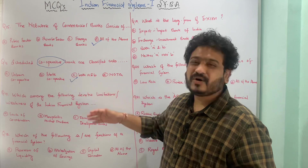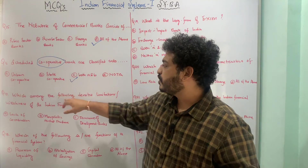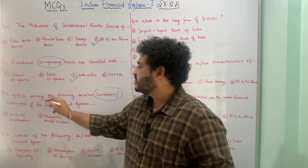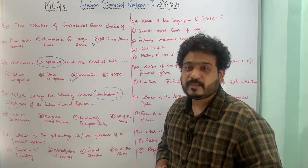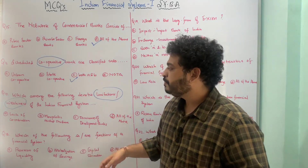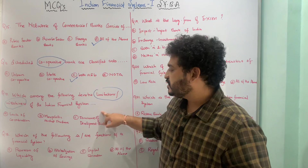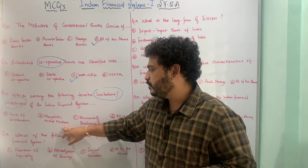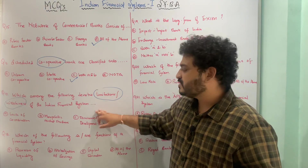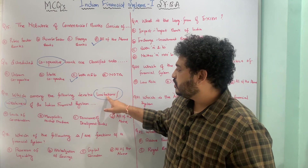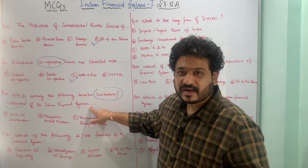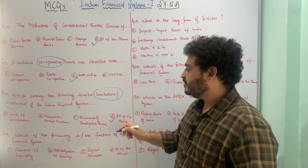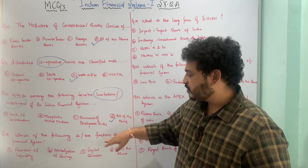The next MCQ asks: which of the following are limitations or weaknesses of the Indian financial system? Option A is lack of coordination, B is monopolistic structure, C is dominance of development banks, and D is all of these. All three are limitations of the Indian financial system, so the correct option is all of the above.